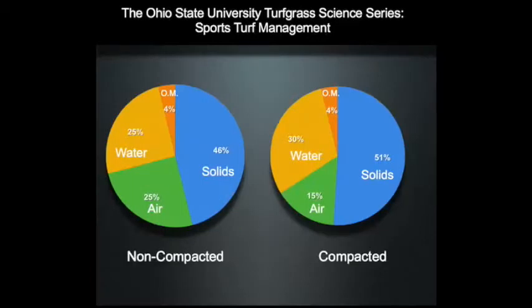Soil compaction occurs when the percent soil solids and the water holding pores increase while the percent air pores decrease, compared to an uncompacted soil. In this figure, the uncompacted soil on the left has more air pores compared to the compacted soil on the right.